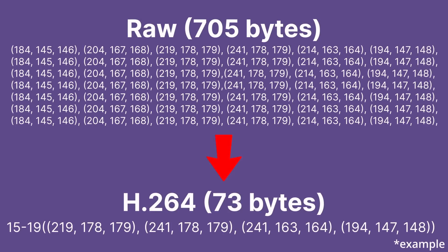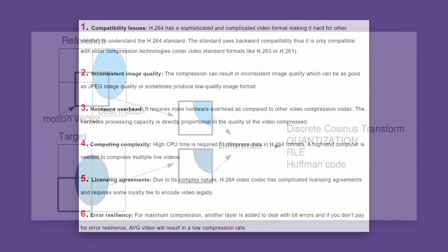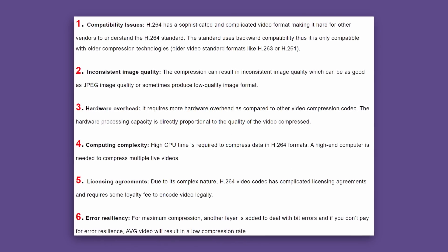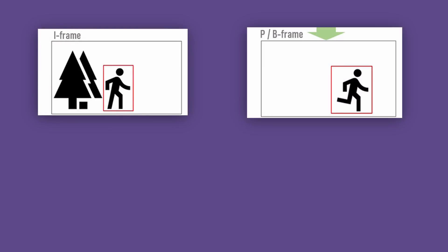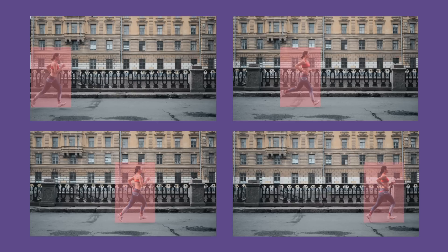Inter-frame compression looks at a group of frames and uses this selection to make predictions about any changes. If the movement is predictable and against a solid background, then the software will only encode the pixels that have moved. This is a terrific solution, as it only encodes the pixels that have changed instead of the entire frame.